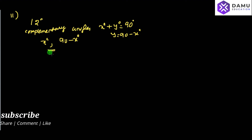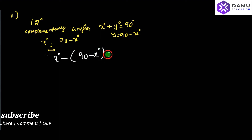Both complementary angles differ by 12 degrees. So let us write: x minus (90 minus x) degrees will be equal to 12 degrees. That is the meaning of the sentence: two complementary angles differ by 12 degrees.